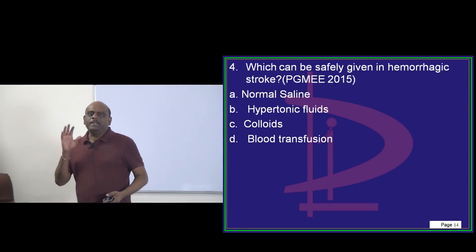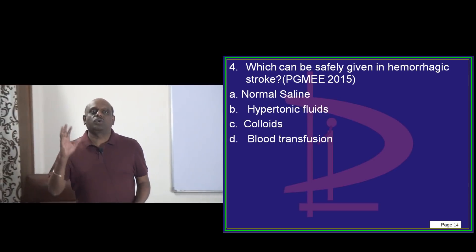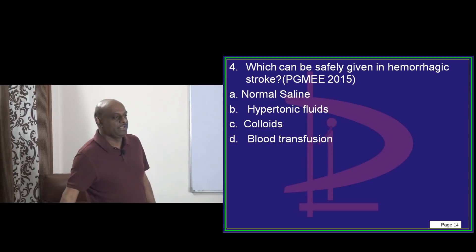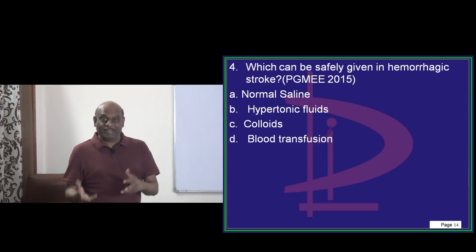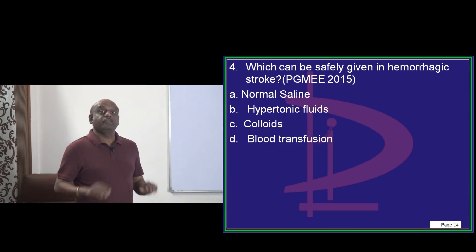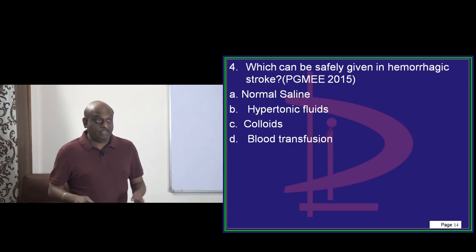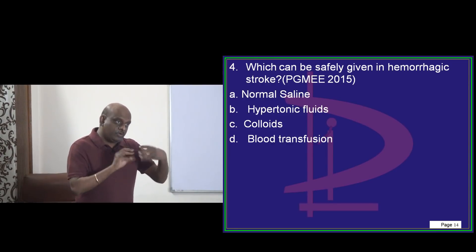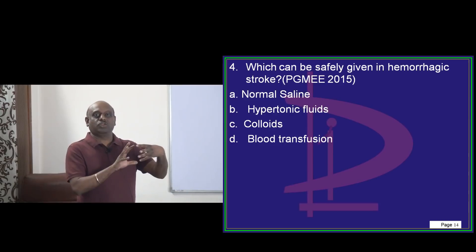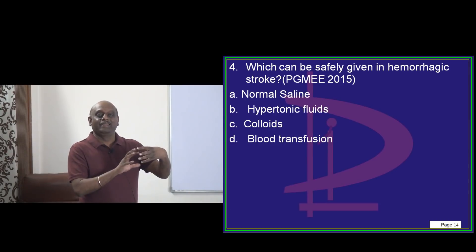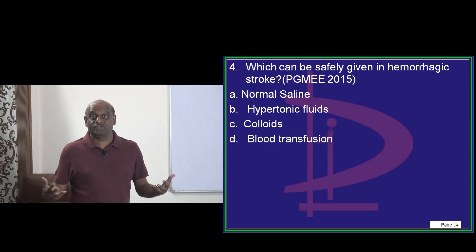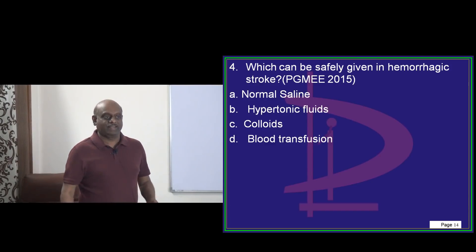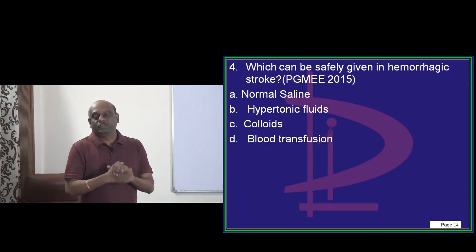Whenever a patient is having a hemorrhagic stroke, always the confusion is whether to give thrombolysis or not. If it is a hemorrhagic stroke, you don't give it. If it is an ischemic stroke and the patient came in the golden hour, if you do thrombolysis with TPA, then the patient has a great chance to recover and not suffer from neurological insults. It is a very important decision.